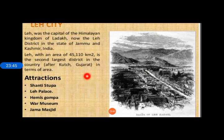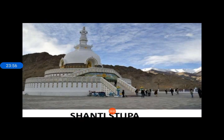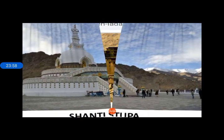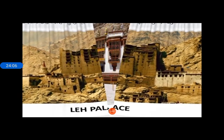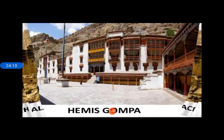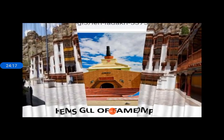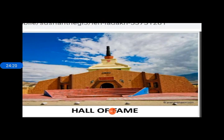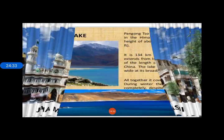In Leh city we find Shanti Stupa, Leh Palace, Hemis Gompa, the War Museum, and Jama Masjid. Let us have a look at them: this is Shanti Stupa, this is Leh Palace, this is Hemis Gompa — a Buddhist monastery — and this is the famous Jama Masjid.